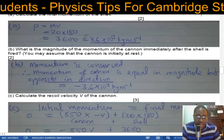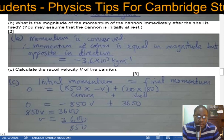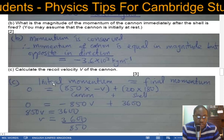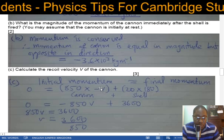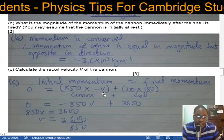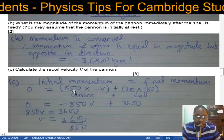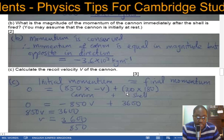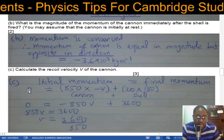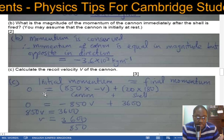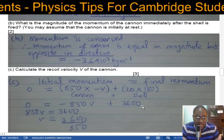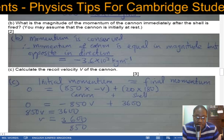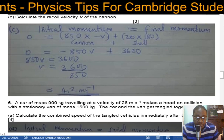Calculate the recoil velocity of the cannon. As the shell fires to the right, the cannon recoils backward. Initial momentum is zero. So: mass of cannon times recoil velocity plus mass of shell times shell velocity equals zero. That gives −850V + 3600 = 0, so 850V = 3600, and V = 4.2 meters per second.